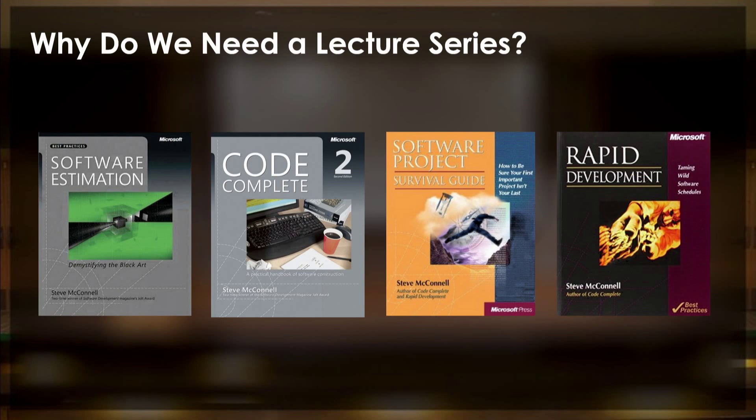As we look at the books I've written, Software Estimation was published back in 2006, Code Complete was published in 2004, Software Project Survival Guide was all the way back in 1997, and Rapid Development was all the way back in 1996.